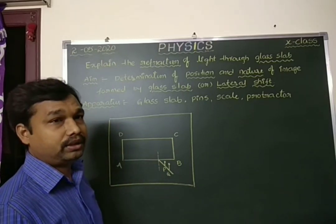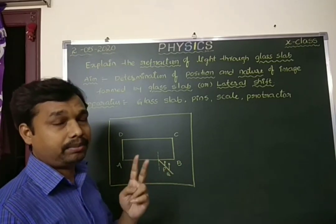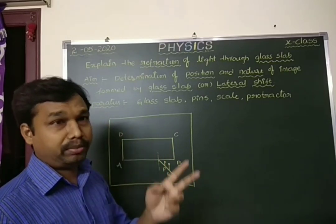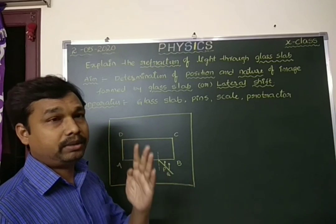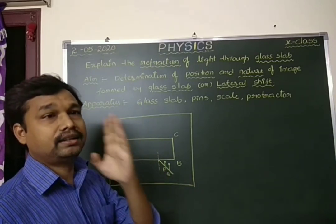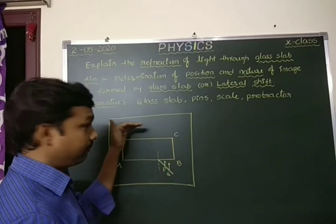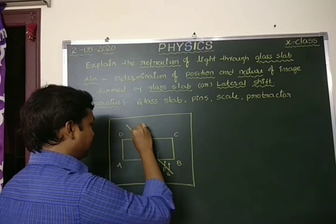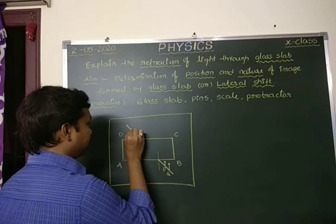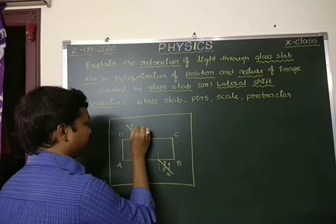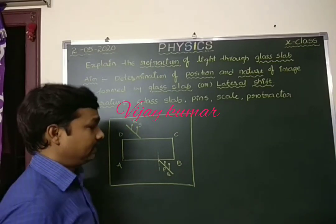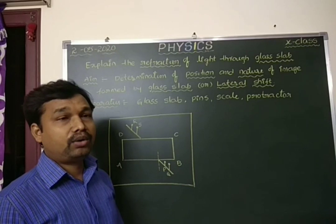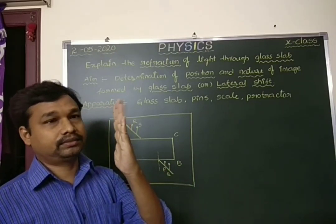We need to observe pins P and Q through the glass slab from the DC side. If you observe through the glass slab, the two pins P and Q appear as only one pin. We then place two more pins — named R and S — so that all four pins P, Q, R, and S appear to be in a straight line, like only one pin.